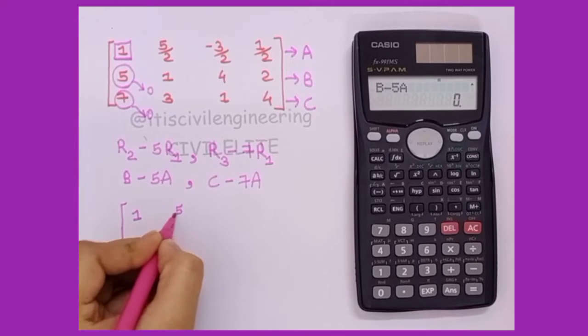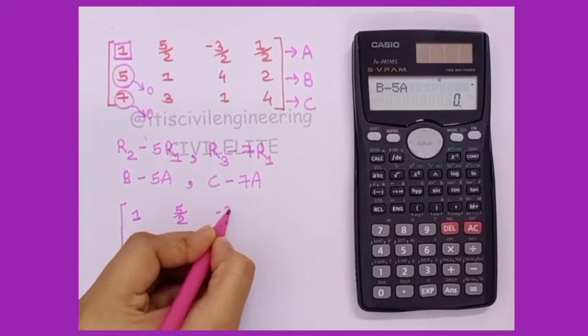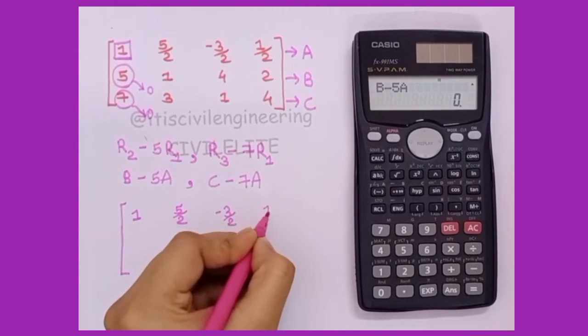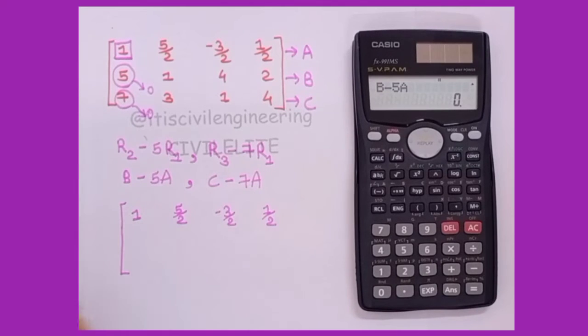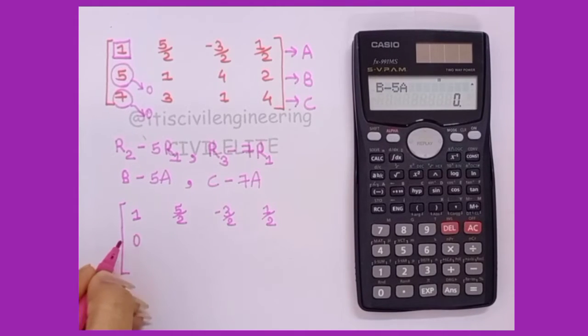The first row is as it is: 1, 5 by 2, minus 3 by 2, and 1 by 2. Here it will be 0.